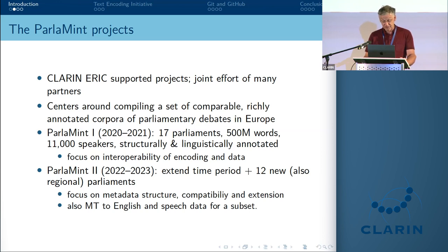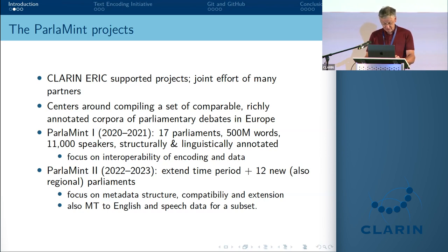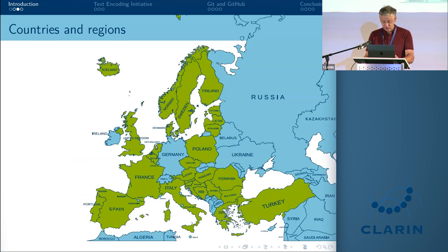Looking at the map, Parliament Two covers a large set of European countries. There was difficulty convincing someone from Germany to participate, but they will likely be able to add a Ukrainian corpus. Prerequisites for compiling such a corpus set include a robust and easily maintainable encoding — since different countries have different parliamentary systems requiring accommodation — as well as good documentation, automatic validation and conversion procedures, and support for collaborative development with versioning and attribution.